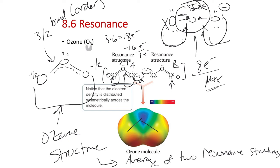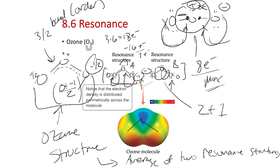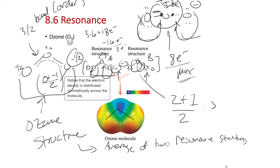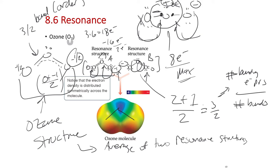In one resonance structure the formal charge was zero, the other minus one - with two possibilities, we get minus one half from taking zero plus negative one and dividing by two. Just like we get the three-halves bond order from taking the two bonding pairs of electrons for the double bond plus the one pair for the single bond and dividing by the number of O-O bonds - two plus one divided by two gives three halves. This comes from the number of bonding pairs of electrons divided by the number of bonds.